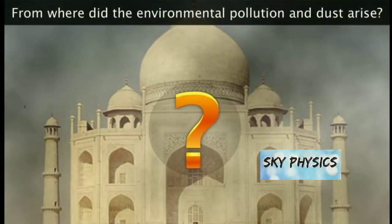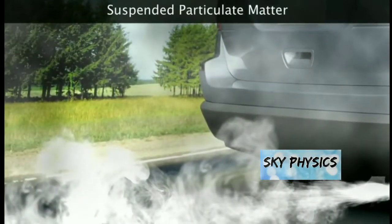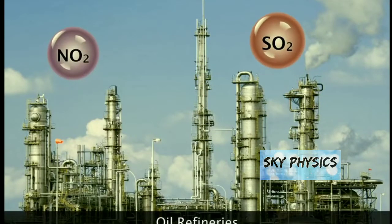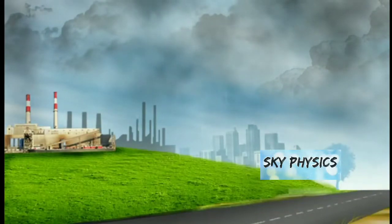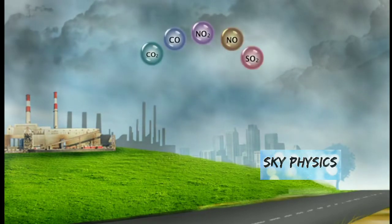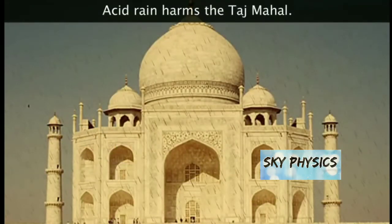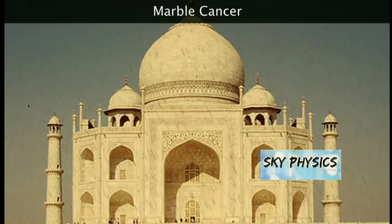Environmental pollution and dust arise from industries, factories, and automobiles, which release extensive harmful gases and suspended particulate matters. Oil refineries release NO2 and SO2, which are harmful gases. These gases mix with the air and cause acid rain. These acid rains harm the Taj Mahal and play a vital role in discoloring it, a process which is called marble cancer.